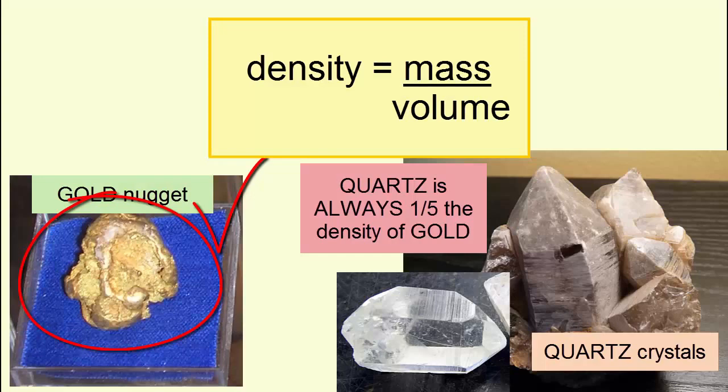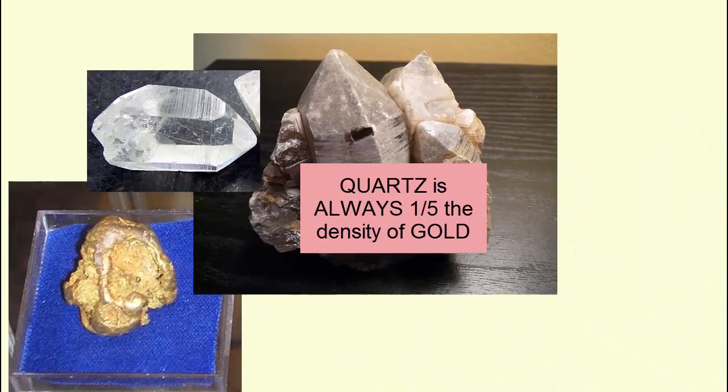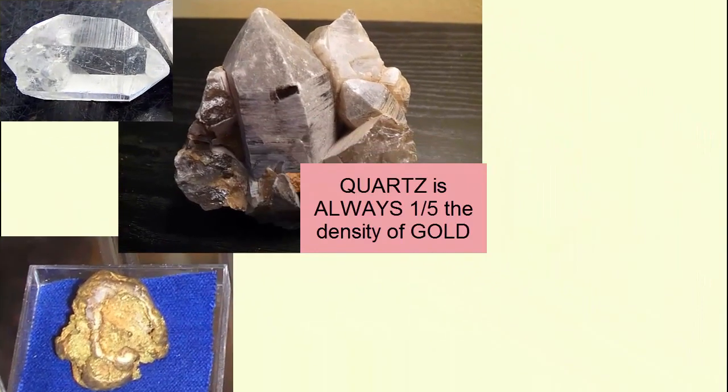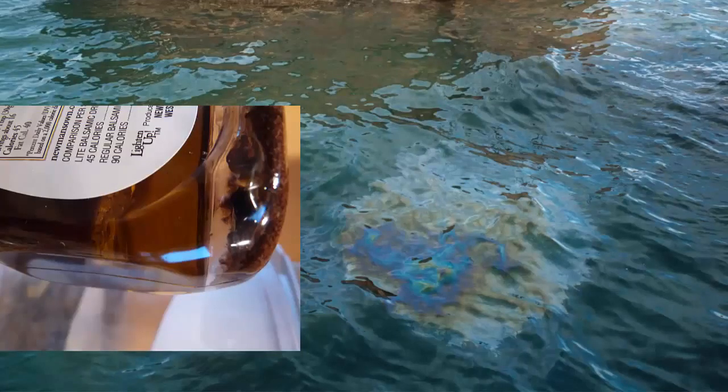Quartz is always one-fifth the density of gold, and if both were molten and floating in a bucket together, the quartz would rise to the top and the gold sink to the bottom. We see this really clearly when we mix oil and water. The denser water sinks under the less dense oil.